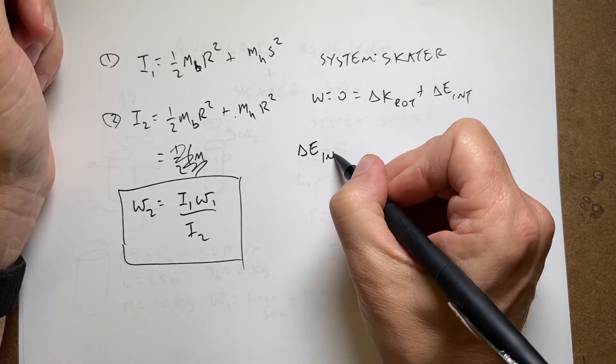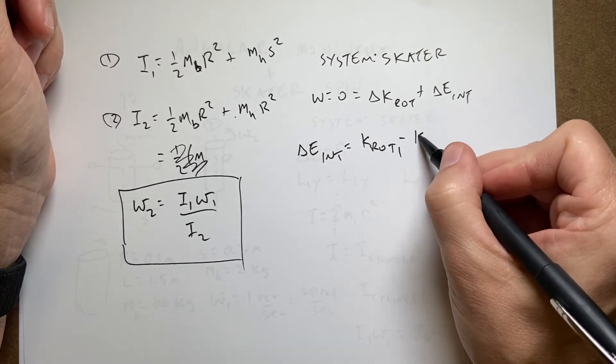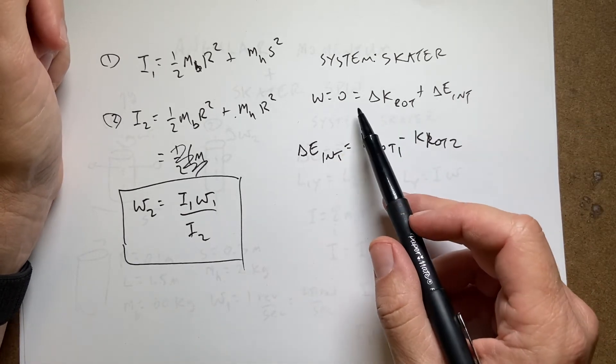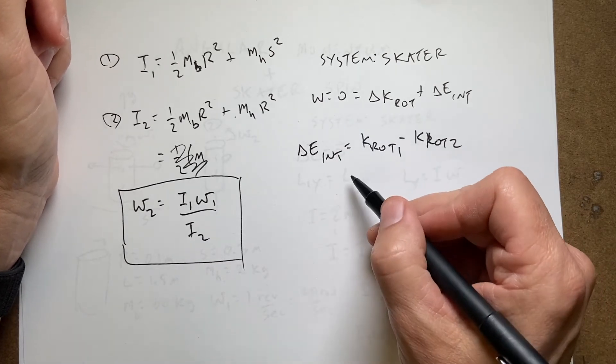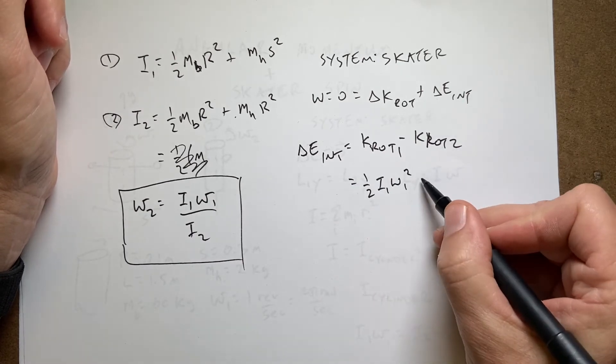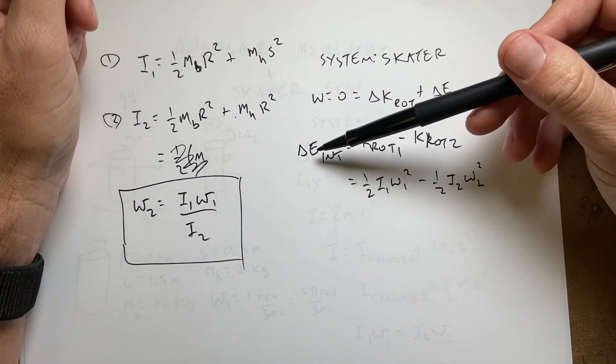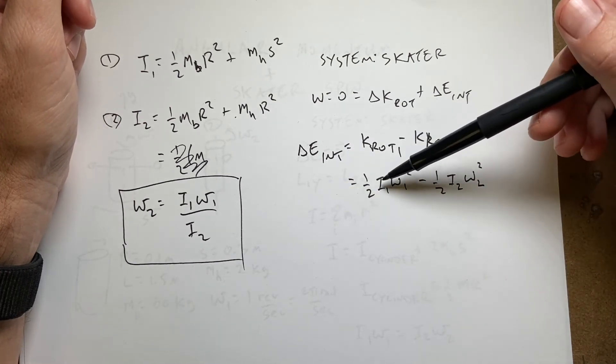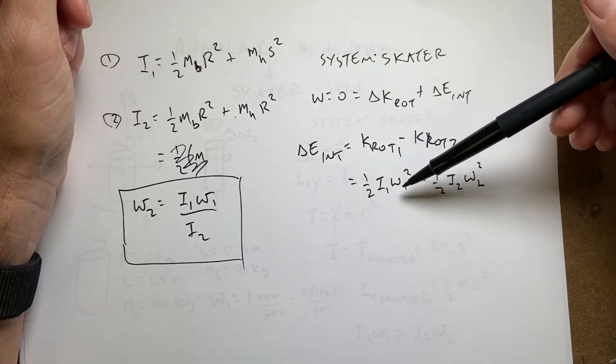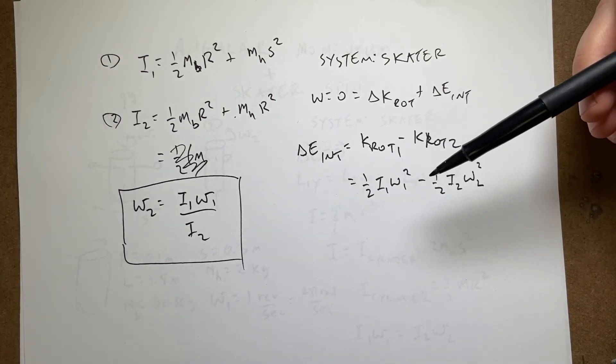So this is going to be the change in internal energy is going to be K_rotational_1 minus K_rotational_2, because when I move to the other side I get negative. It's actually final minus initial but then I have a negative of that. And the rotational kinetic energy is going to be ½·I1·ω1² minus ½·I2·ω2². And so here it's not clear that this is going to be a decrease in energy because in this case I1 is going to be greater than I2 but ω2 is going to be greater than ω1. So the question is which one's going to win and I know the answer but you don't and that's fine.